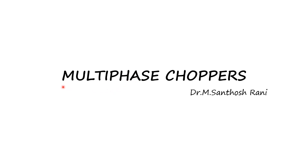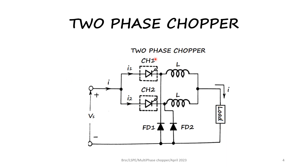In this lecture we are going to see about a multi-phase chopper. A multi-phase chopper is a DC to DC converter. This is a two-phase chopper — we can have two-phase, three-phase, four-phase, any number of phases based on the number of choppers used. Here, chopper one with its inductor and the load forms one path, chopper two with its inductor and the load forms a second path. FT1 is a freewheeling diode connected in the chopper one circuit.